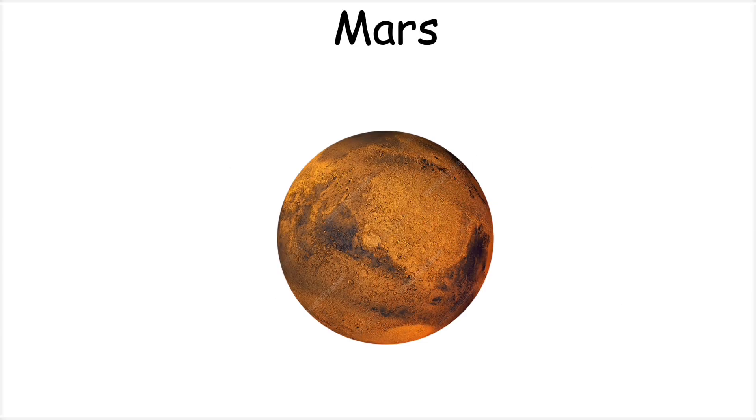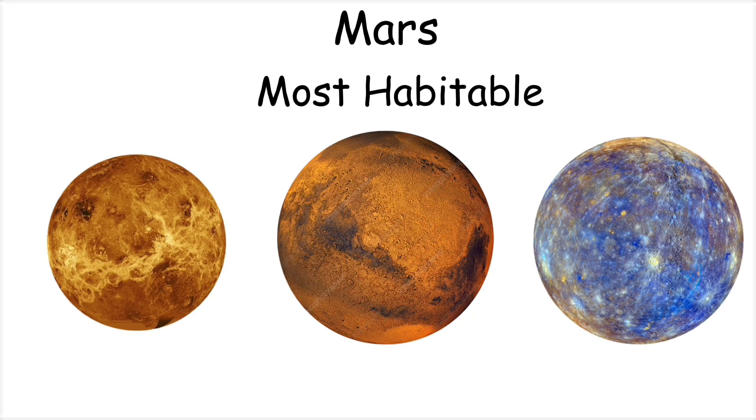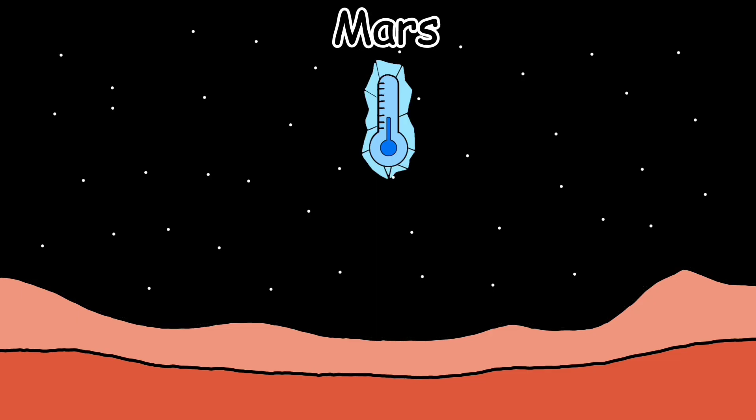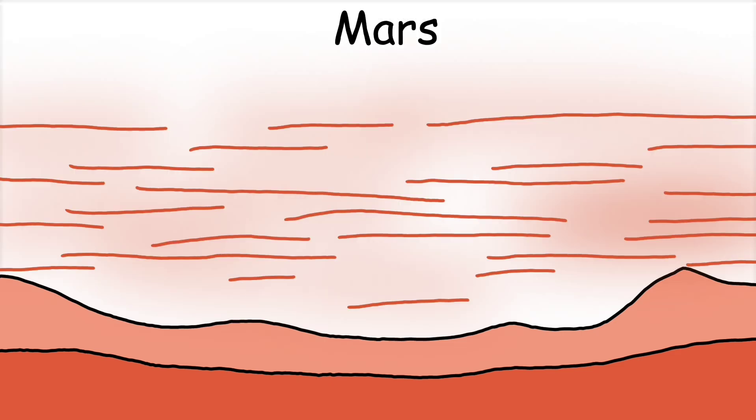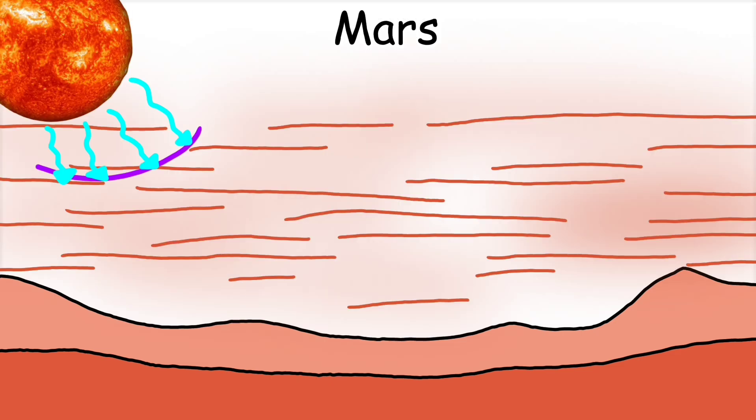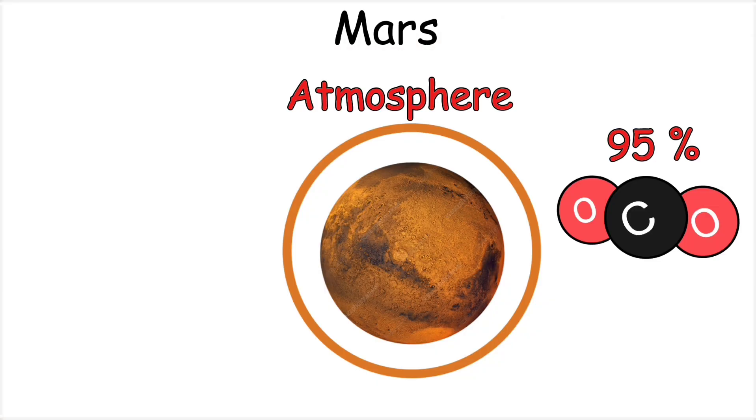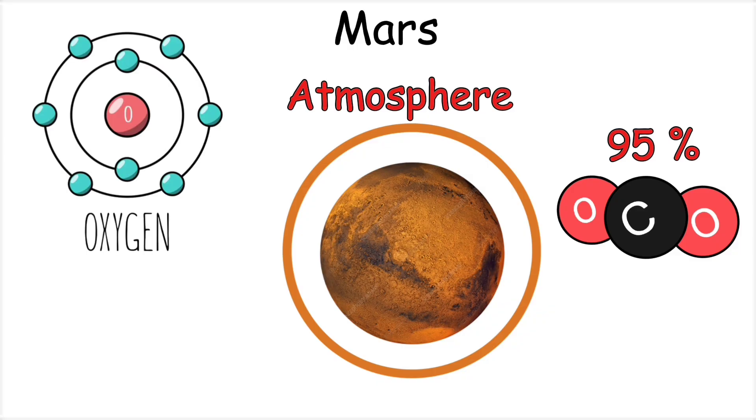Mars is the most habitable planet compared to the others. During the day, its temperature can reach around 25 degrees Celsius, which is suitable for us. But at night, it drops to between minus 60 degrees Celsius and minus 140 degrees Celsius. Mars also has massive dust storms, which can block sunlight from reaching the surface for weeks. Its atmosphere is very thin and made up of about 95% carbon dioxide, with only a very small amount of oxygen, which makes breathing difficult.